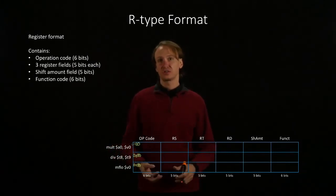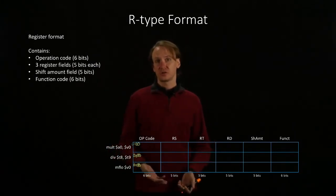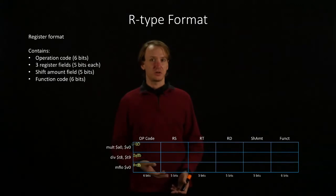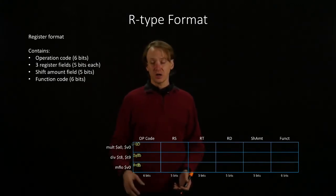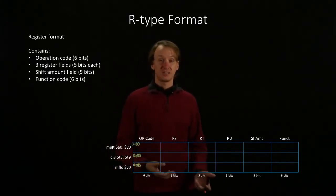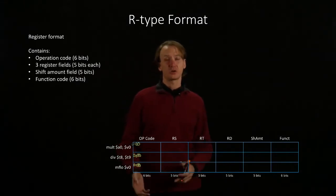The multiply and divide instructions both have two source registers, but no destination register. In contrast, the move from low instruction has a destination register, but no source registers.